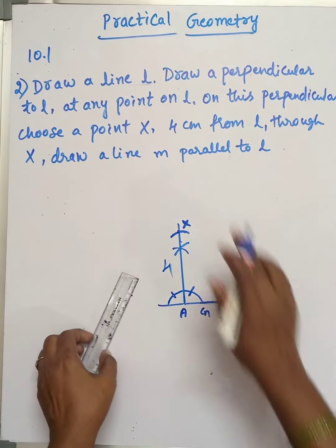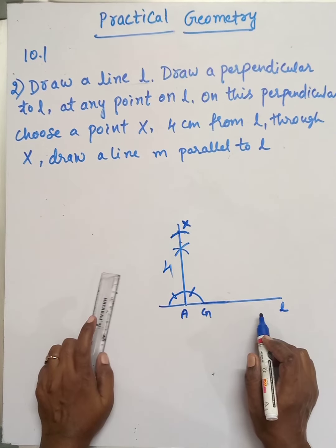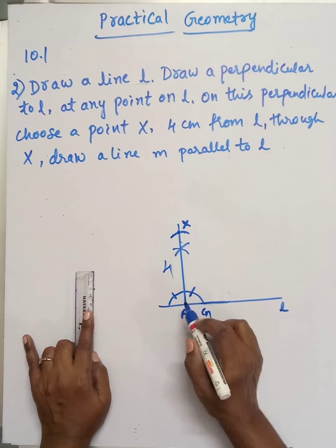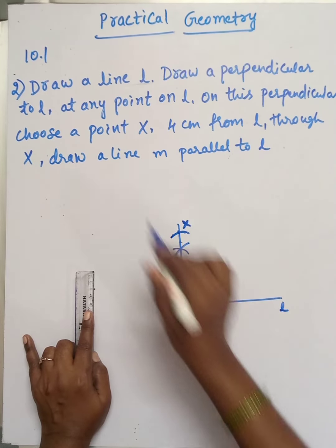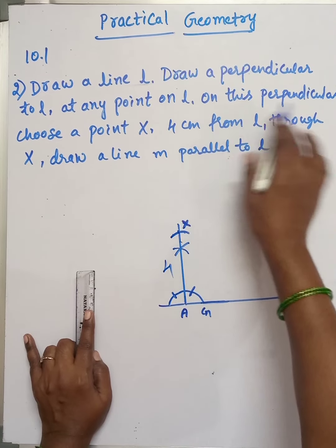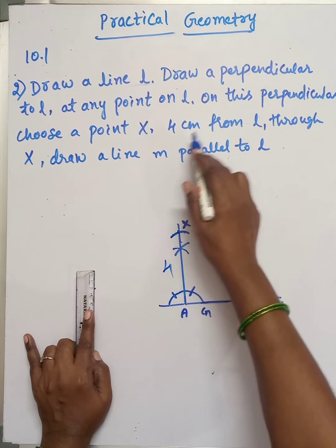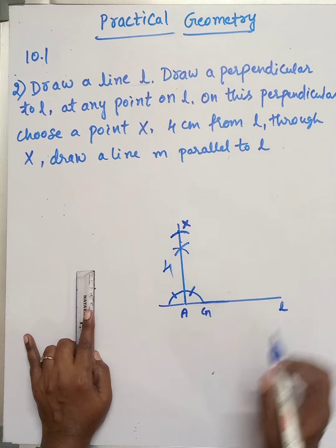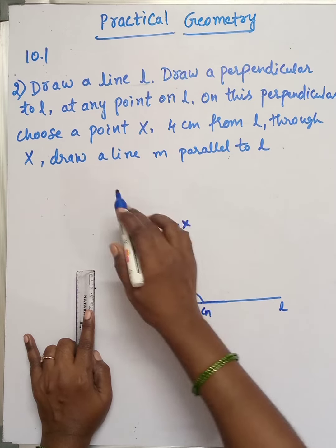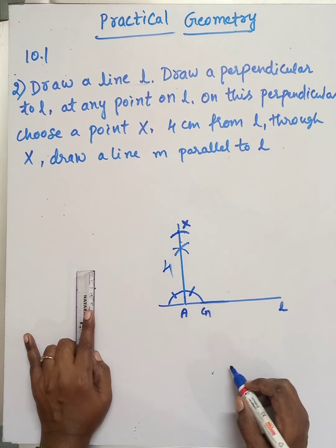Now we need to draw a line. Draw line L, draw a perpendicular to L at any point on L, choose a point X on this perpendicular 4 cm from L. Through X, draw a line M parallel to L.